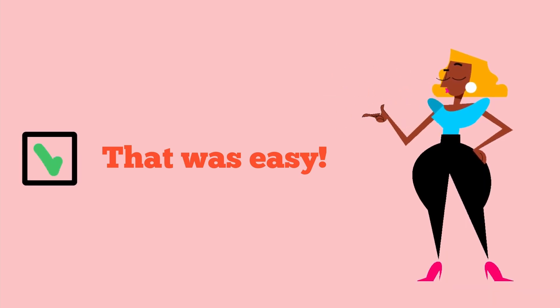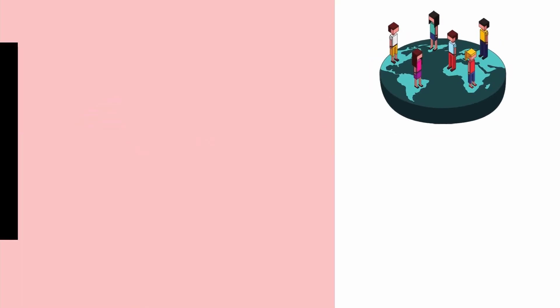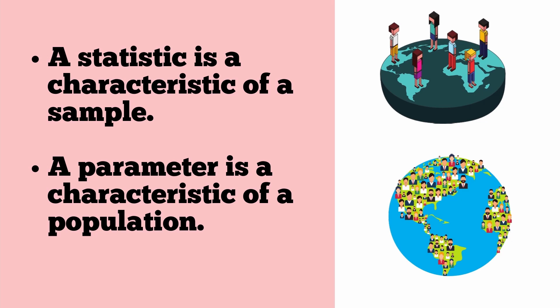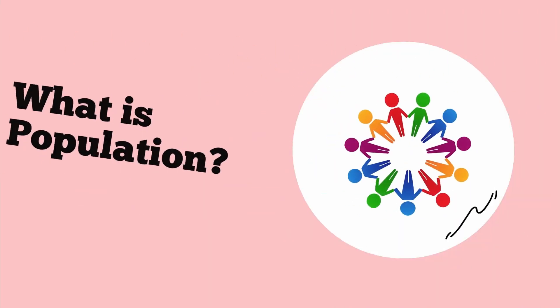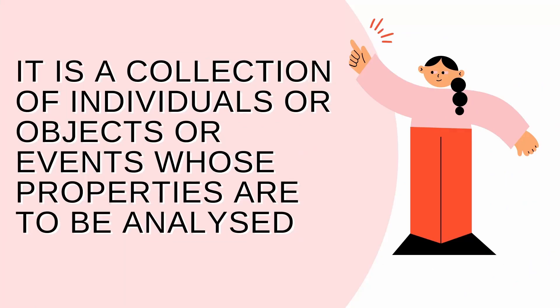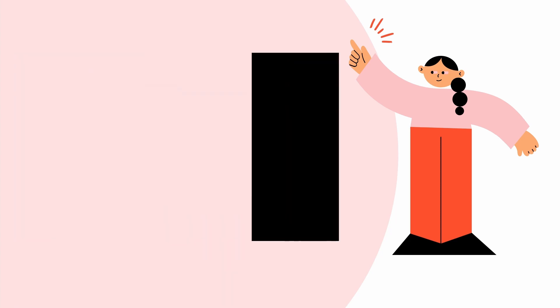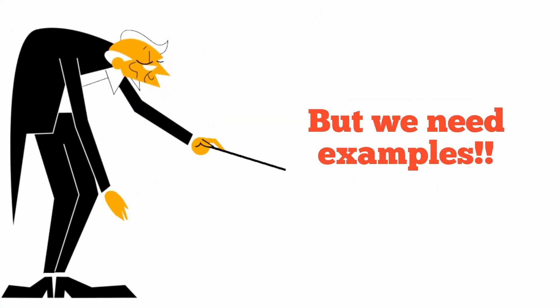There is another definition of statistics: a statistic is a characteristic of a sample, while a parameter is a characteristic of a population. To understand this, we must first understand what a sample and a population are. A population is a collection of individuals, objects, or events whose properties are to be analyzed — in simpler words, the complete data collected for a study or experiment; it is the data of an entire group.